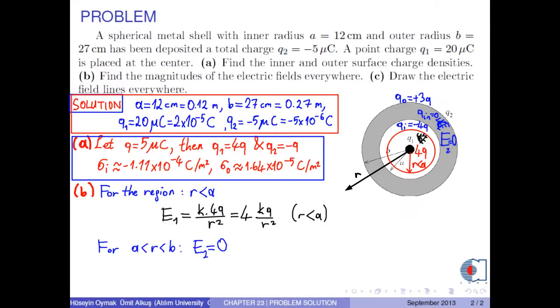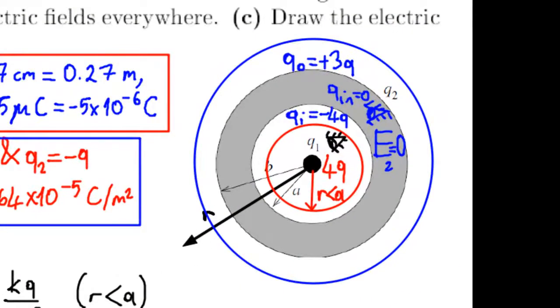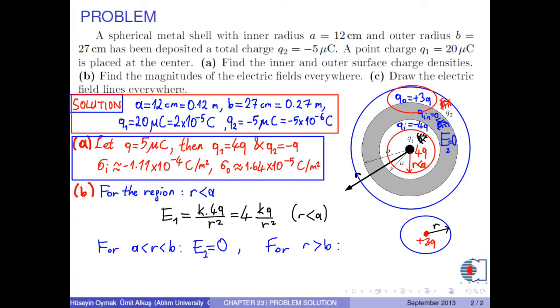Finally, in the region where R is greater than B, that is outside the whole sphere, we see only the charge on the outer surface, which is 3Q. Therefore, the electric field is calculated as 3KQ over R squared.